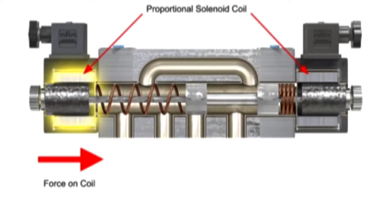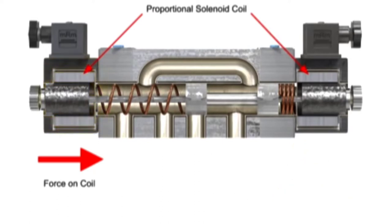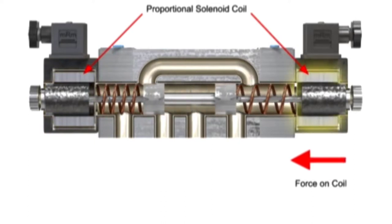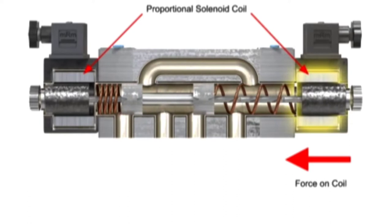With proportional valves, the spool can be shifted against the centering spring force to any distance up to full shift by varying voltage and current.